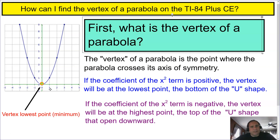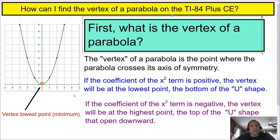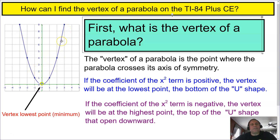In this parabola the vertex is at the lowest point, and that's called the minimum. The vertex of a parabola is the point where the parabola crosses its axis of symmetry, and the axis of symmetry goes right through the center of the parabola. If the coefficient — the number before the x squared term — is positive, that means the vertex will be at the lowest point and that parabola will be facing up. I say if it has a positive coefficient, it looks like a happy face smiling.